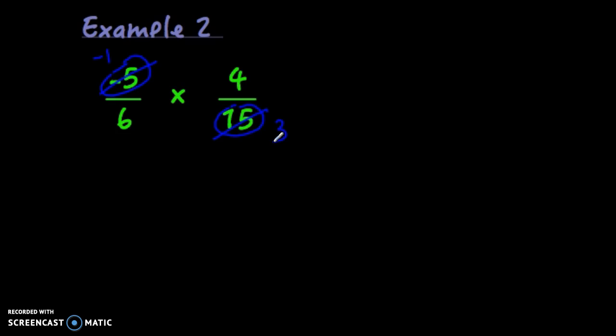And kind of cool here, 4 and 6 also have a common factor. They both can be divided by 2. So 4 divided by 2 is 2. 6 divided by 2 is 3. And then I'm going to multiply straight across. So when I multiply my new numerators, I have negative 1 times 2, and that's negative 2. 3 times 3, that's 9. The final answer here is negative 2 ninths.